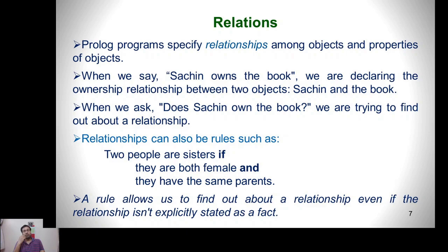The first element is relation. Relations basically specify the relationship among objects and the relationship among properties of objects. For example, if we say 'Sachin owned the book,' we are declaring an ownership relationship between two objects — Sachin and book — and the relationship is 'owned.' When we ask 'did Sachin own the book,' we are trying to find out about that relationship.